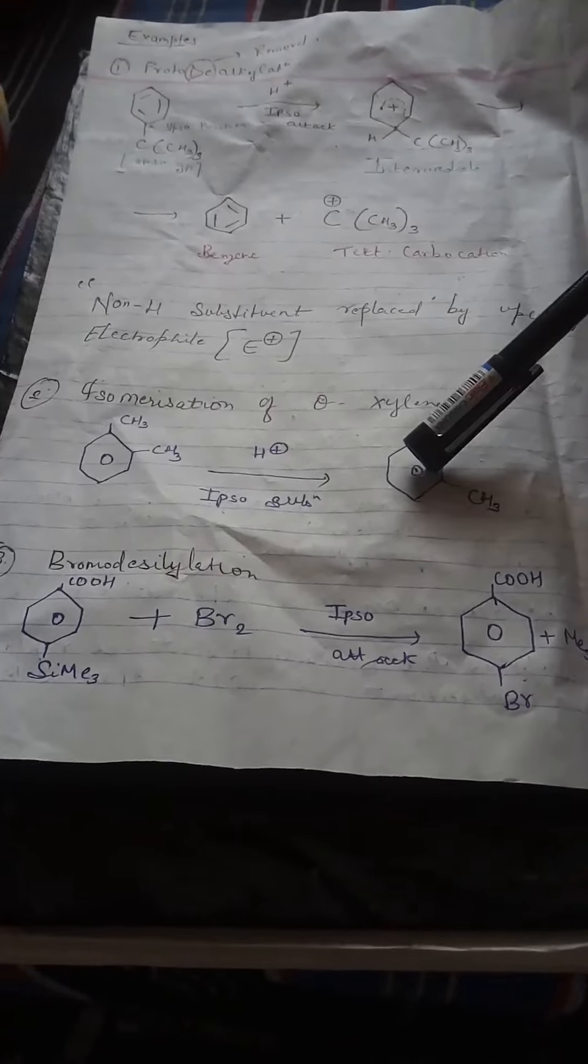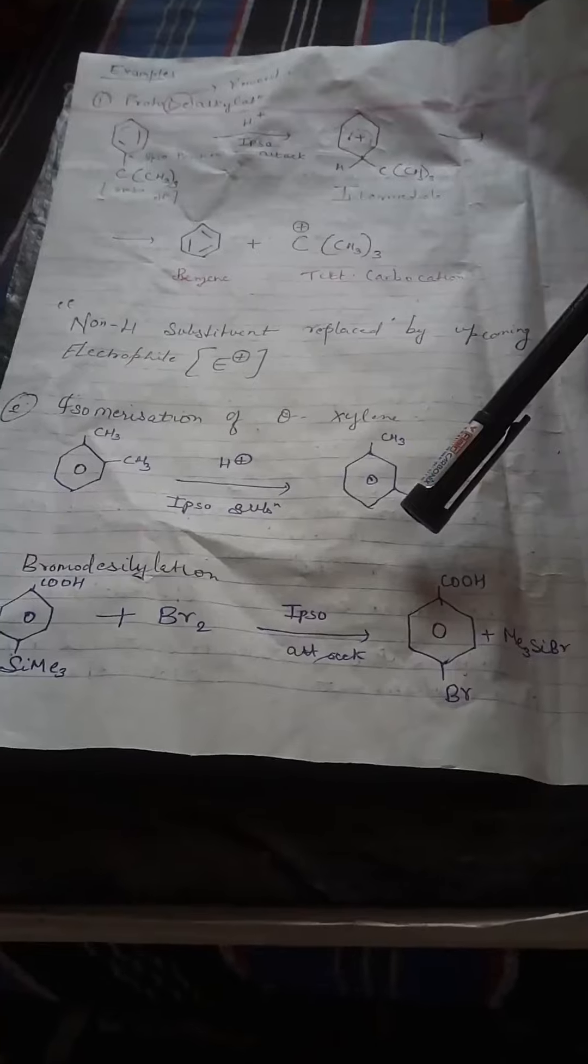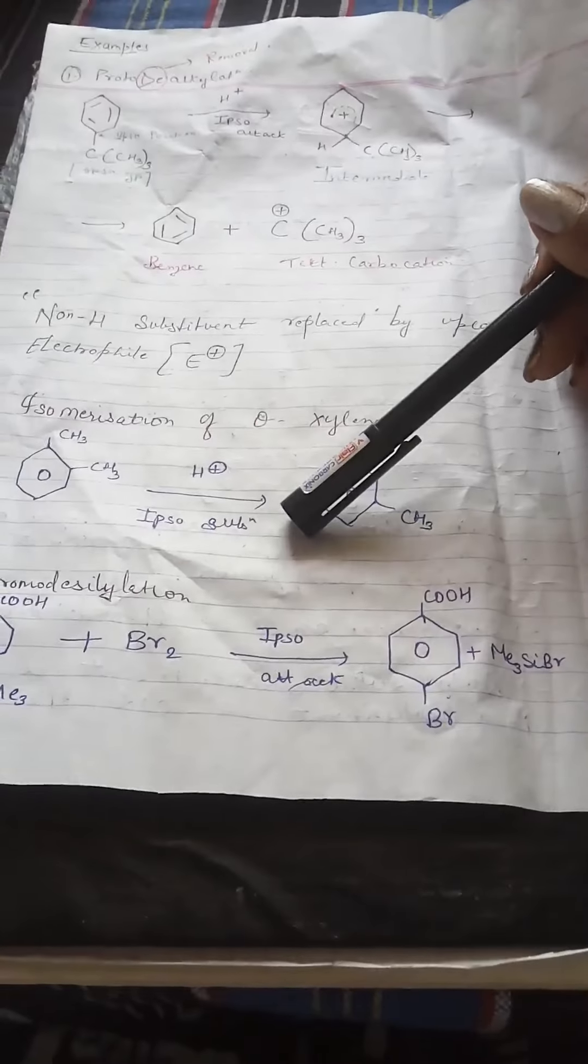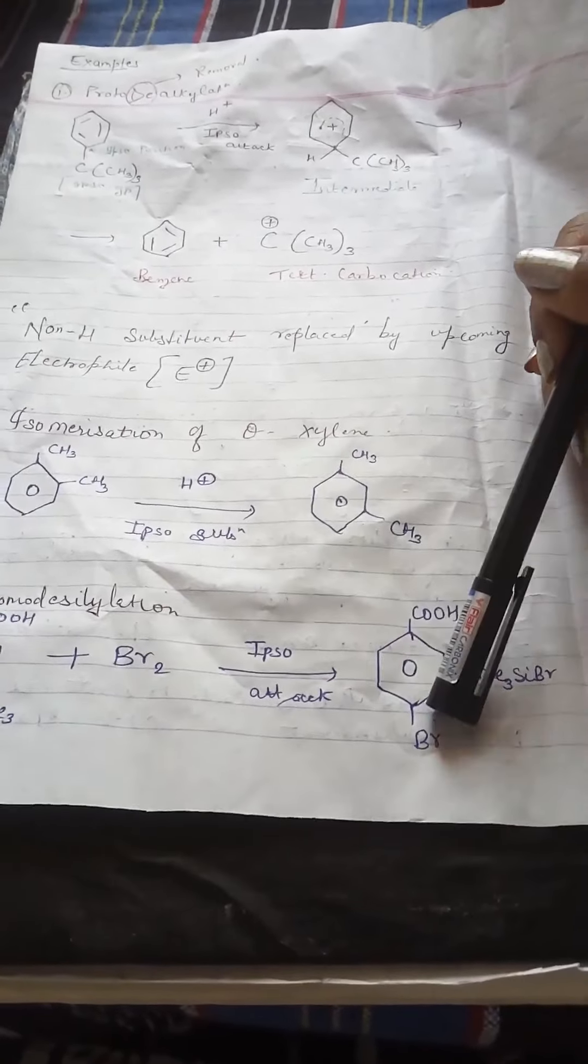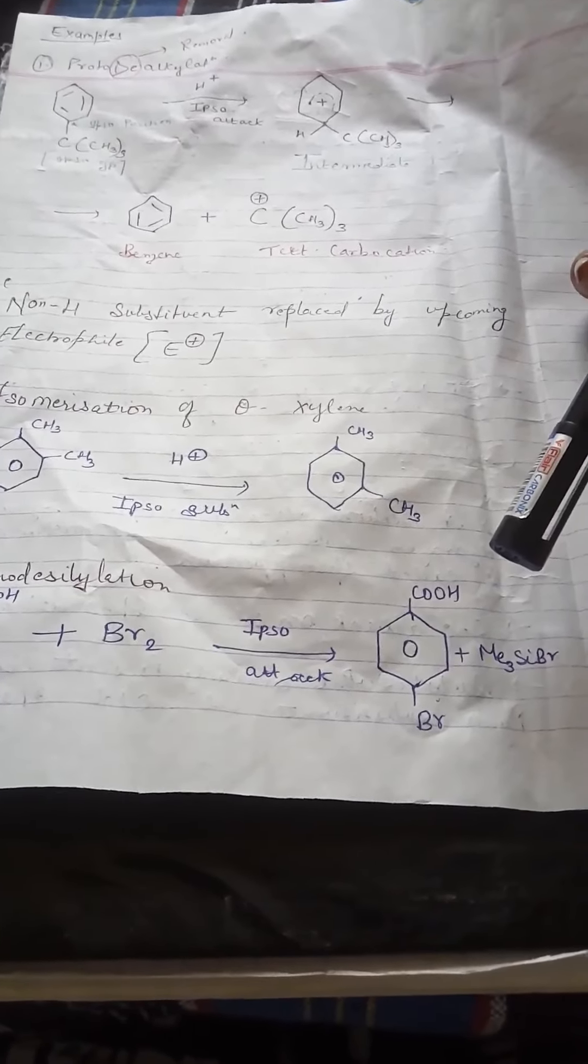Last example. Bromodeseleolation. In Bromodeseleolation, your trimethyl selene is removed through ipso attack. And bromine group gets attached to the benzene ring. Thank you.